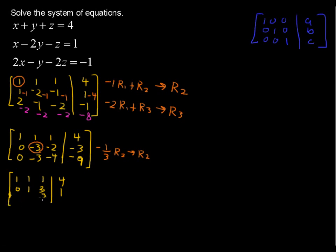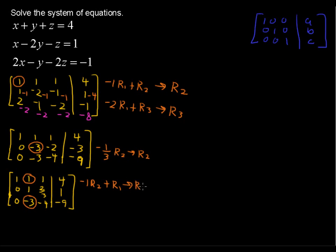Row 3 was not affected, so I'll write what we had. Now we want zeros in the first row above the new 1, and in the third row below it. Negative 1 times row 2 plus row 1 will replace row 1. And 3 times row 2 plus row 3 will replace row 3. For row 1: 0, 1, 0. Then 2 thirds times negative 1 is negative 2 thirds plus 1 gives 1 third. And 4 minus 1 is 3.